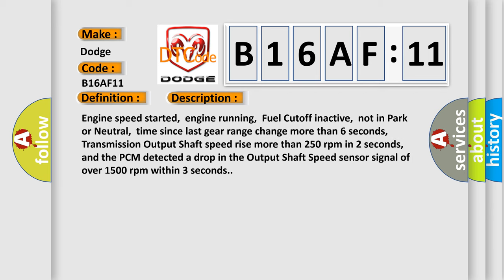Engine speed started, engine running, fuel cutoff inactive, not in park or neutral, time since last gear range change more than six seconds, transmission output shaft speed rise more than 250 RPM in two seconds, and the PCM detected a drop in the output shaft speed sensor signal of over 1500 RPM within three seconds.